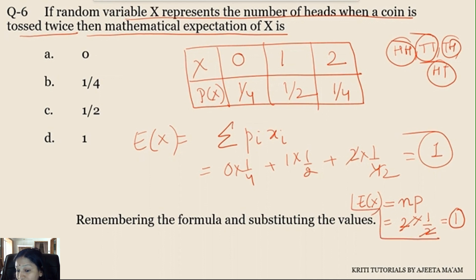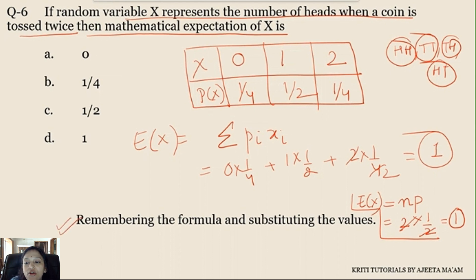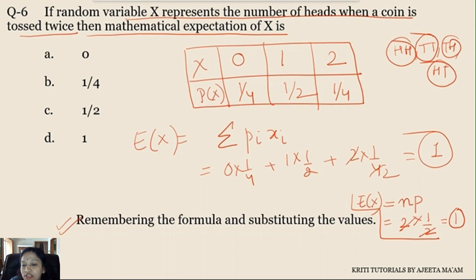Don't worry if you don't know binomial — with the simple random distribution table you will get the same answer. If you remember the formula and substitute the values, you get the answer easily. So that covers the first 6 questions from Section A — this is Part 1. The rest will continue in the next video, that is Part 2. Hope you all understood it well. Thank you everyone.